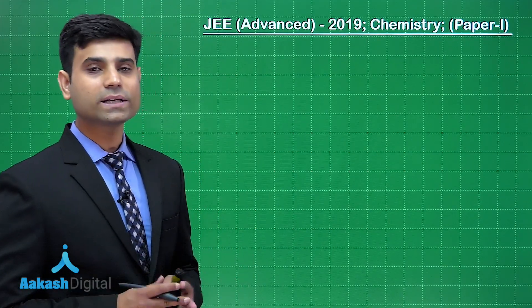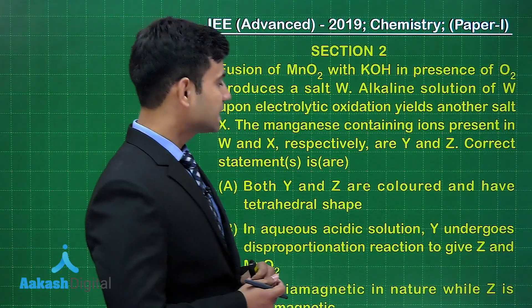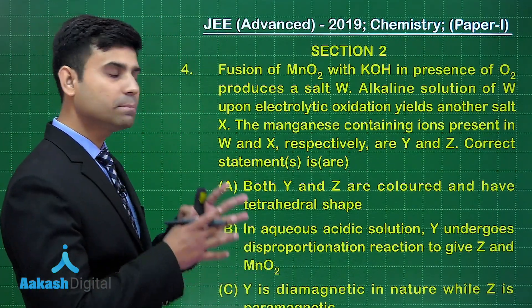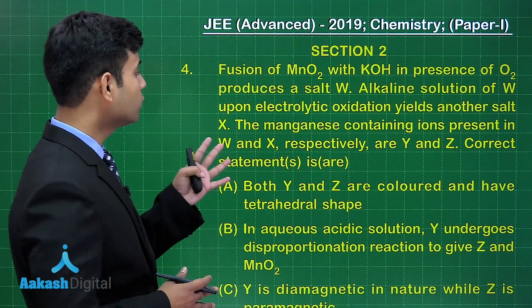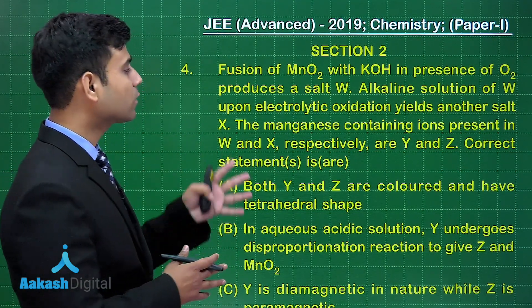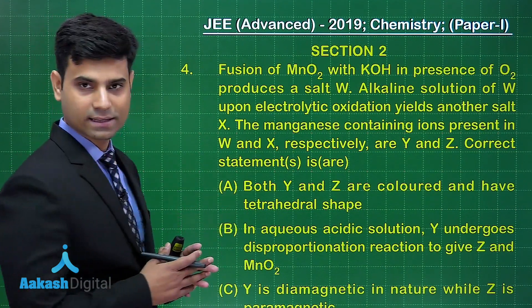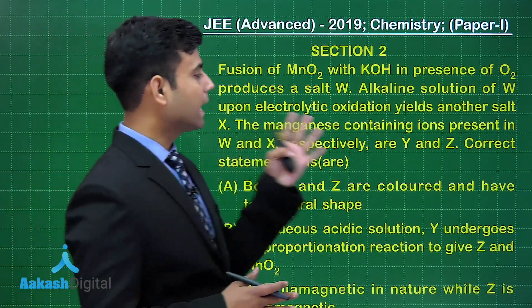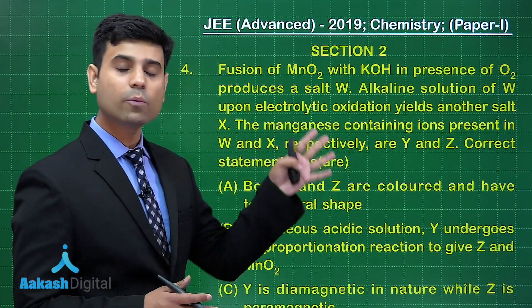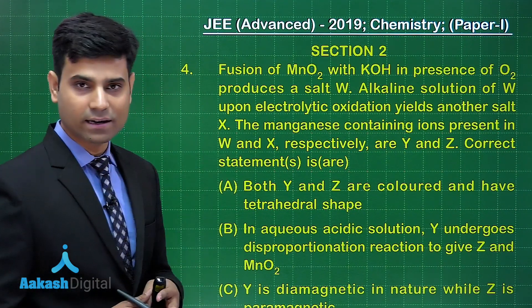Let's discuss the next question of this section. The question says: fusion of MnO2 with KOH in the presence of O2 produces a salt W. Alkaline solution of W upon electrolytic oxidation yields another salt X. The manganese-containing ions present in W and X respectively are Y and Z. The correct statement or statements is R.